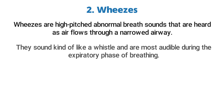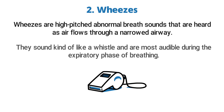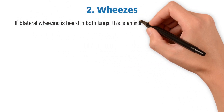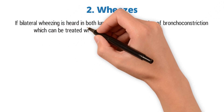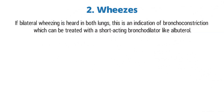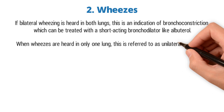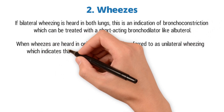Wheezes sound kind of like a whistle and are most audible during the expiratory phase of breathing. If bilateral wheezing is heard in both lungs, this is an indication that bronchoconstriction is present, which can be treated with a short-acting bronchodilator like albuterol. On the other hand, when wheezes are heard in only one lung, this is referred to as unilateral wheezes, which indicates that a foreign body obstruction is present.